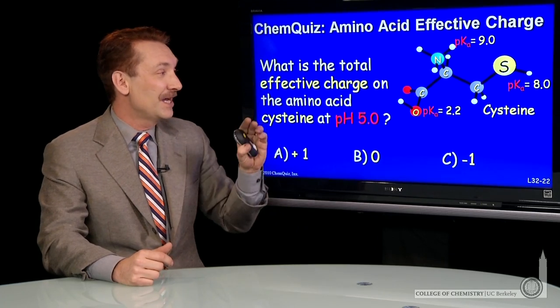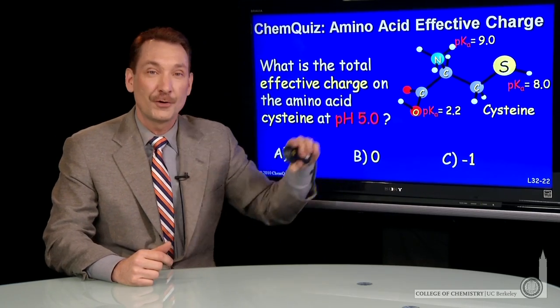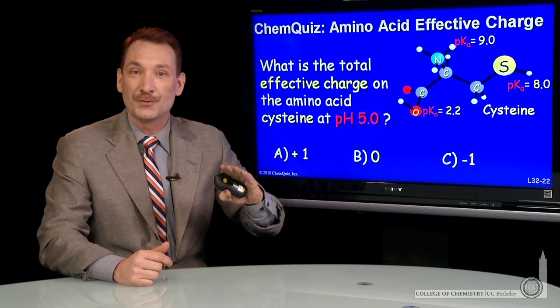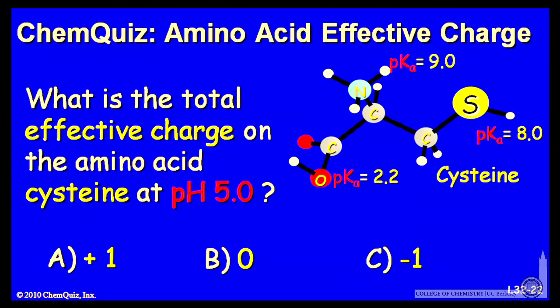The question is, at pH 5, what's the overall charge? So what are the protonation states? Is the overall charge plus 1, 0, or minus 1? Think about that for a minute, and make a selection.